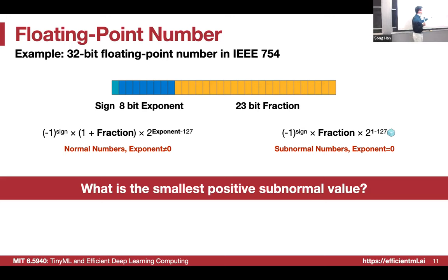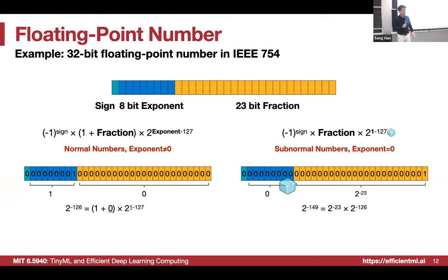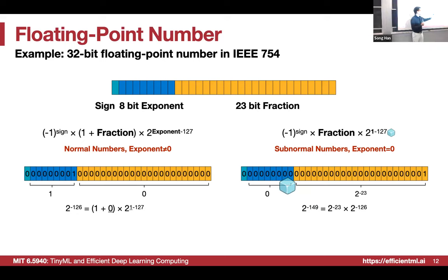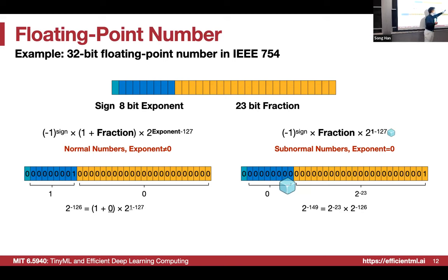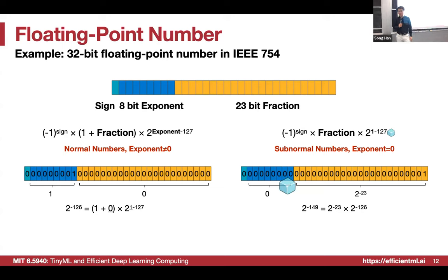What is the smallest positive subnormal value? For a subnormal number, all exponent bits are 0. We set the lowest fraction bit to 1, so the fraction value is 2^(−23). Combined with the fixed exponent term 2^(1 − 127) = 2^(−126), the smallest positive subnormal value is 2^(−149). In computer systems, you cannot represent infinitely small numbers — this is the smallest representable value in FP32, so be careful about numerical stability when dividing.